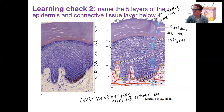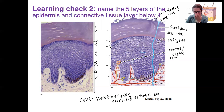Going down here, there are a couple of other cells that are present. These are Merkel cells, also called tactile cells. I want you to know that there are tactile cells in the skin — we'll talk about them with the sensory system later on.